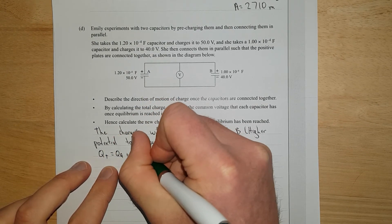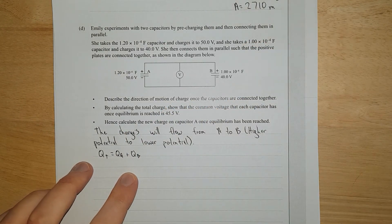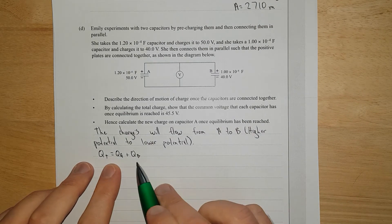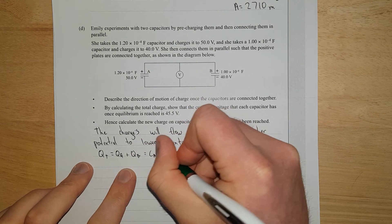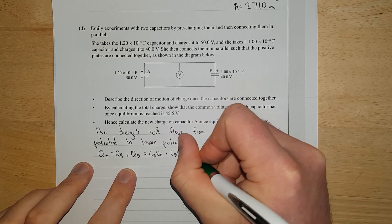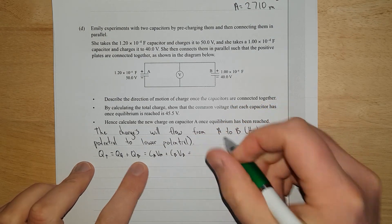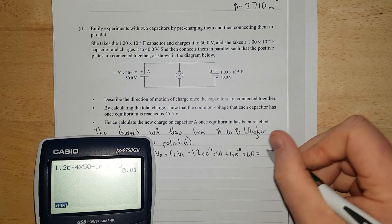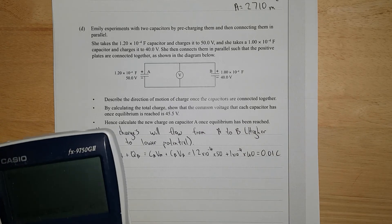What's the formula for it? Q equals CV. So that is going to be equal to CA times VA plus CB times VB. I just wrote that out, and that equals 0.01 coulombs.